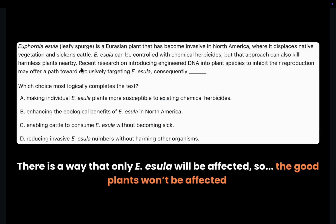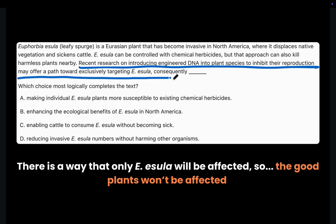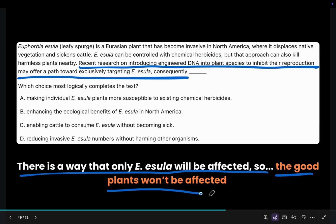Let's go back to the text and move on to P — Predict. Recent research on introducing engineered DNA into plant species to inhibit their reproduction may offer a path toward exclusively targeting esola. Consequently, it is saying that there's a way that only esola will be affected, so the good plants won't be affected. Pretty simple.